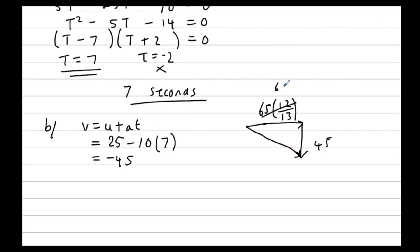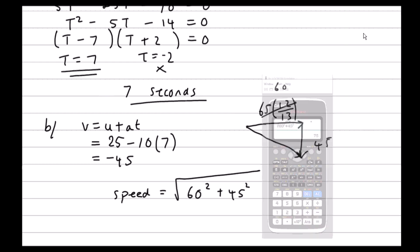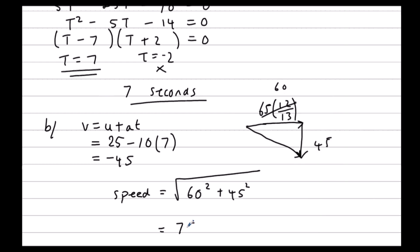So that's 60. I've got 60 squared plus 45 squared, square rooted for the speed. 60 squared plus 45 squared. 75. So it's 75 meters per second.